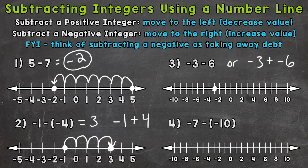We need to move to the left six spots. One, two, three, four, five, and six. So we end up at negative nine. Our answer is negative three minus six equals negative nine.